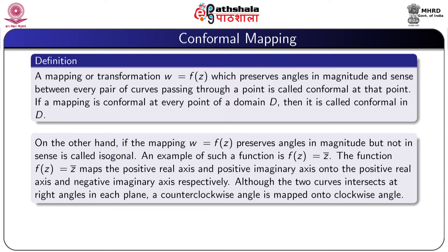An example of an isogonal mapping is f(z) = z̄. The function f(z) = z̄ maps the positive real axis and positive imaginary axis onto the positive real axis and negative imaginary axis respectively. Although the two curves intersect at right angles in each plane, a counter-clockwise angle is mapped onto a clockwise angle.